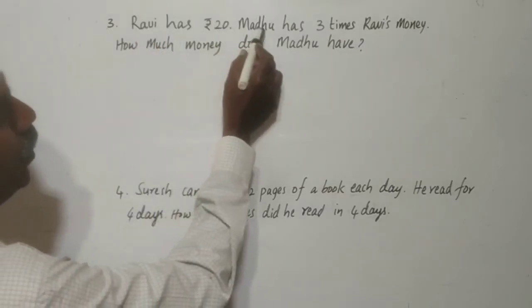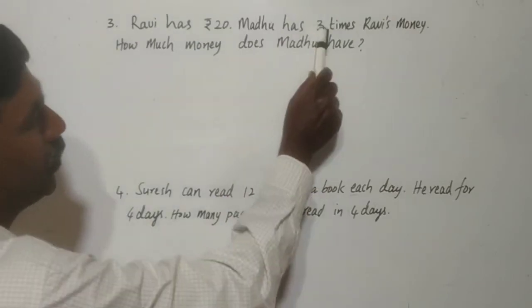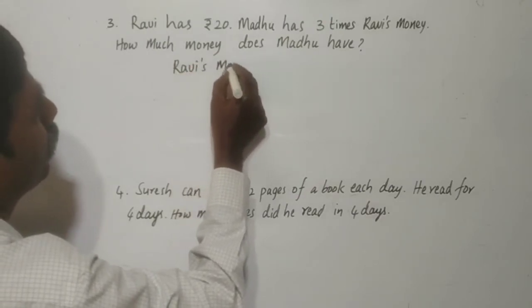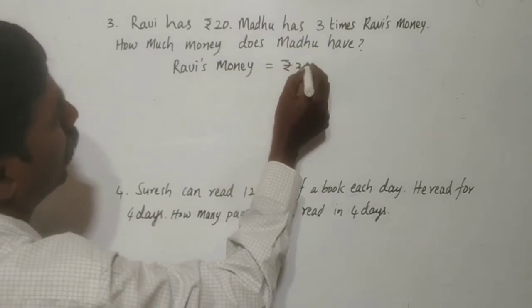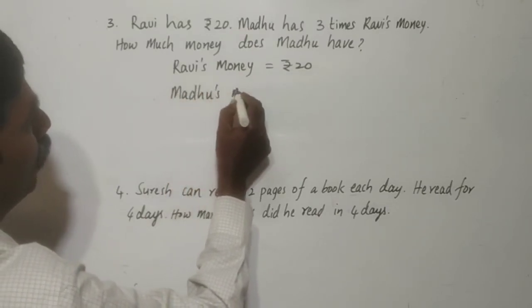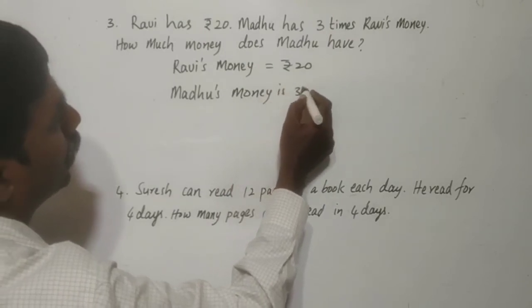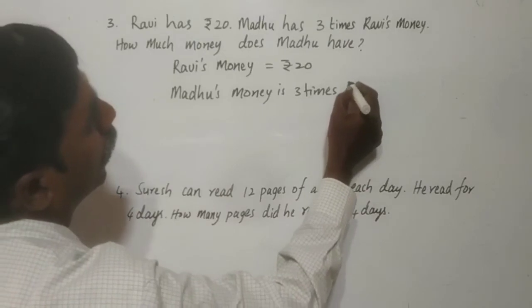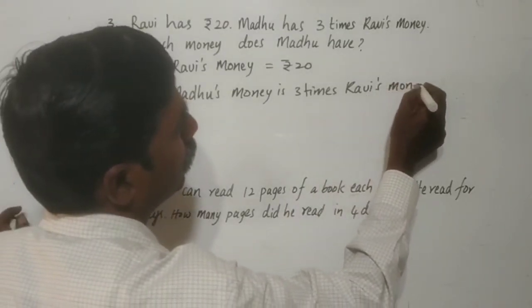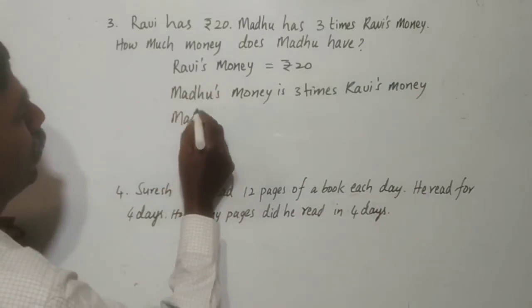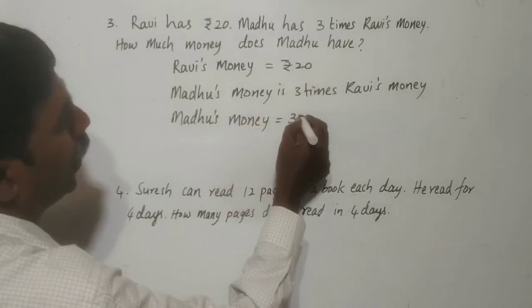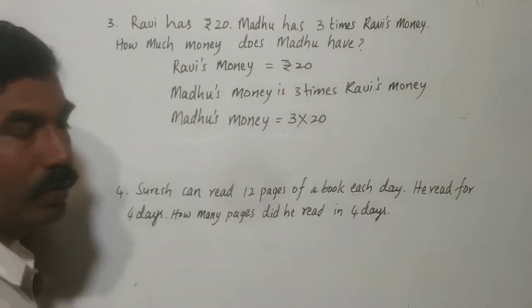So, Ravi has 20 rupees. Madhu has 3 times Ravi's money. Ravi's money is equal to rupees 20. Madhu's money is equal to 3 times of Ravi's money.